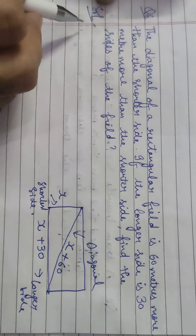Rearranging: 2X² − X² + 60X − 120X + 900 − 3600 = 0, giving X² − 60X − 2700 = 0. Solve this quadratic equation by any of the three methods to find two roots, then substitute into diagonal (X+60), longer side (X+30), and shorter side (X).